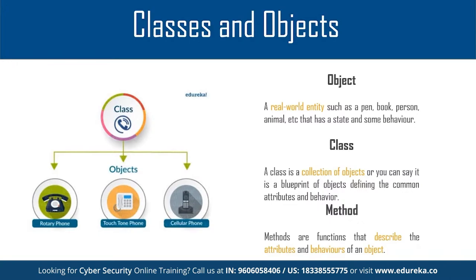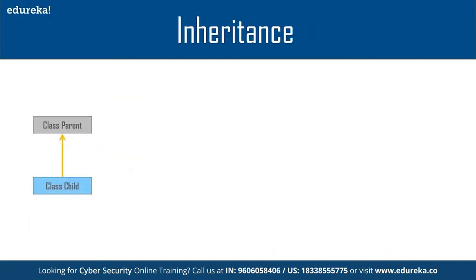Methods are functions that describe the attributes and behaviors of an object. For instance, a parrot: the class is 'bird,' and it flies — that's an attribute; it talks — another attribute; it is green with a long body, two legs, and two wings. Similarly for a cellular phone: it has a body, housing, circuitry, buttons, and a screen. Nowadays cellular phones are used for much more than talking — for browsing, etc.